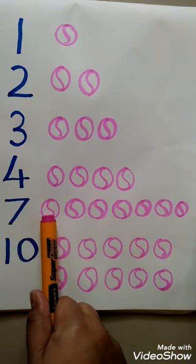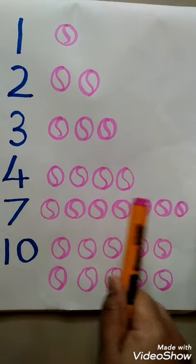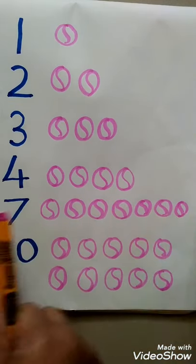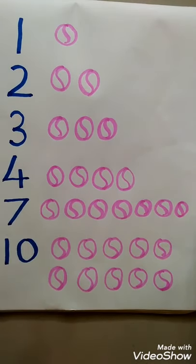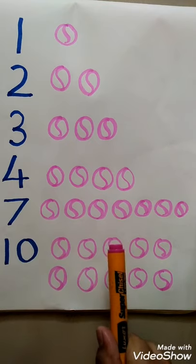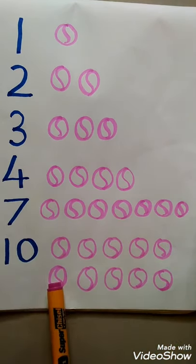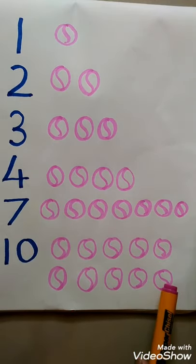Number 7: 1, 2, 3, 4, 5, 6, 7 — 7 balls. Now the last number is number 10. So for number 10, how many balls? 10 balls. So count: 1, 2, 3, 4, 5, 6, 7, 8, 9 and 10. So children, what we have learned today?